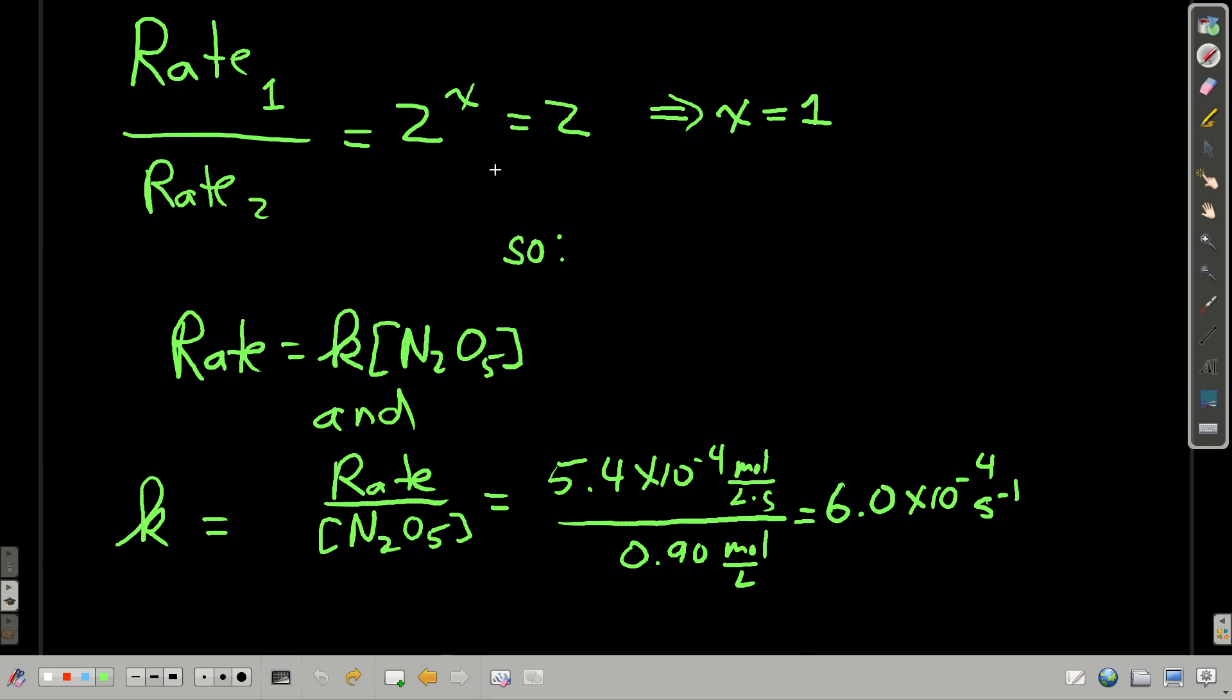Rate 1 over rate 2 equals 2 to the X, but it's also equal to 2. This 2 came from the ratio of the rates, 5.4 times 10 to the minus 4th over 2.7 times 10 to the minus 4th is 2. This came from the ratio of the rate laws, K, concentration of N2O5 to the X, at 0.9 and 0.45, we get 2 to the X. Well, here, the only way this equation is true is if X is equal to 1. Now we know X. We know the form of the rate law. It's just K, concentration of dinitrogen pentoxide to the first power.